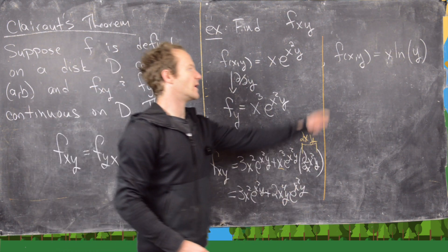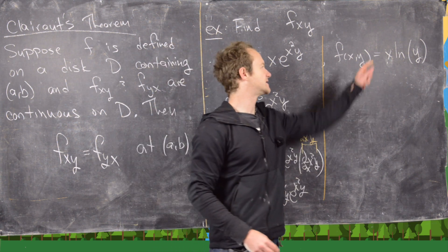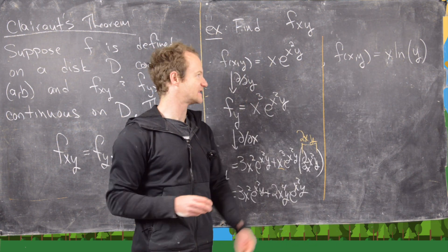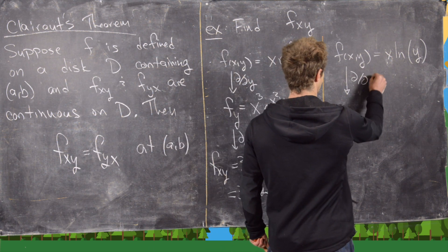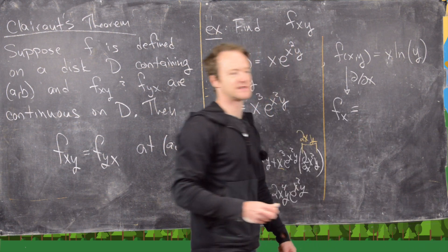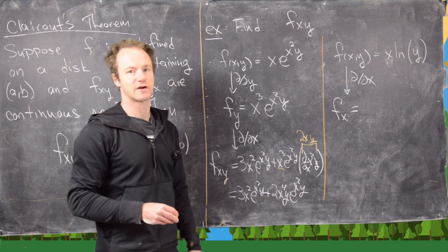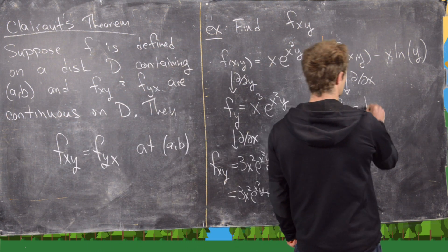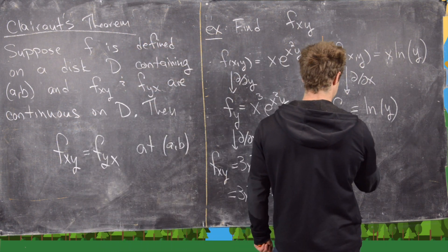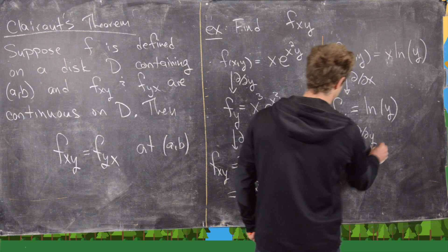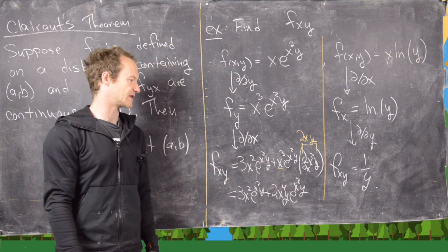Now let's look at the next example. Here it may be easier to take the x derivative first because the y is wrapped up in a natural log. So taking the partial with respect to x: ln(y) is a constant, acting like a coefficient of x, so f_x = ln(y). Then taking the partial of ln(y) with respect to y gives f_xy = 1/y, because that's the derivative of the natural log.